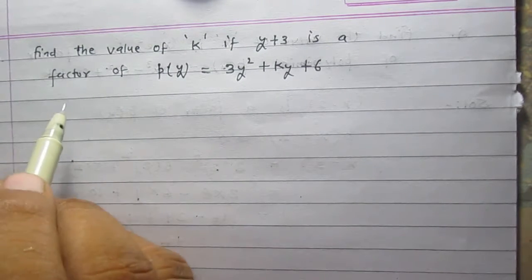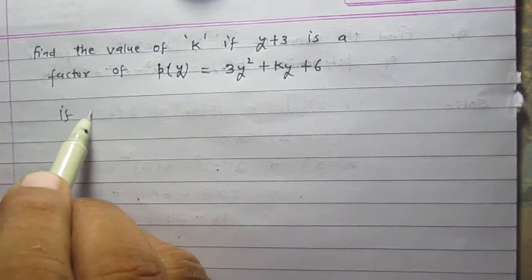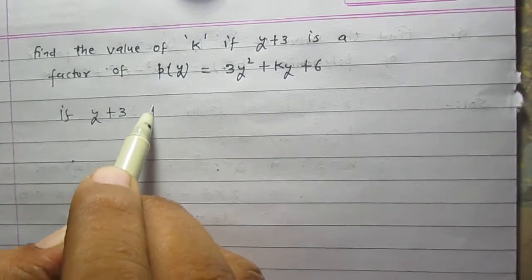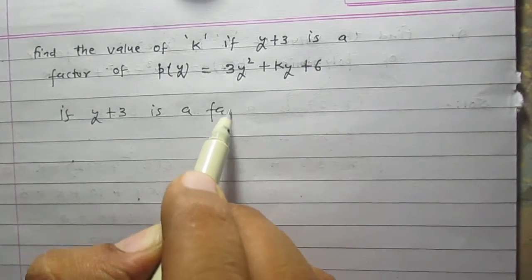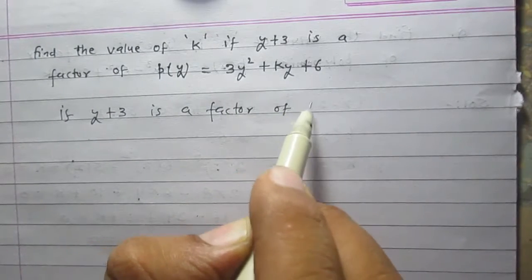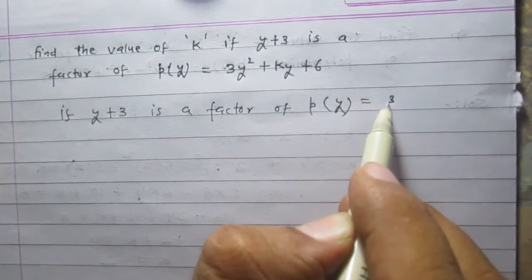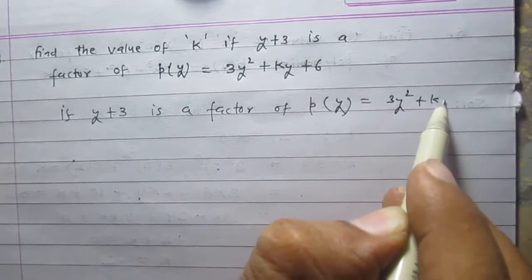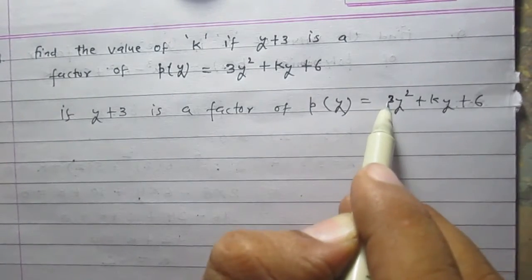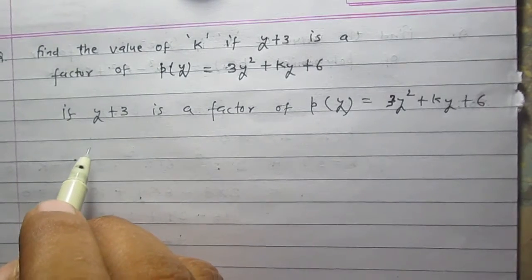According to the factor theorem, if y plus 3 is a factor of p(y) which is 3y squared plus ky plus 6, then according to the factor theorem,